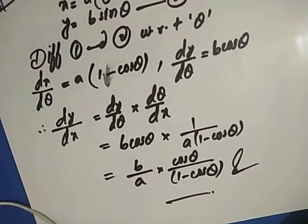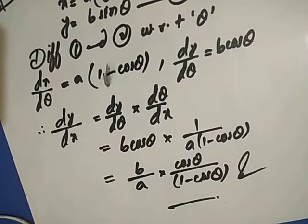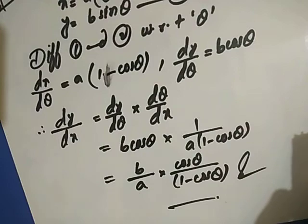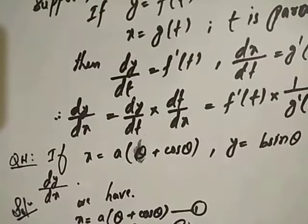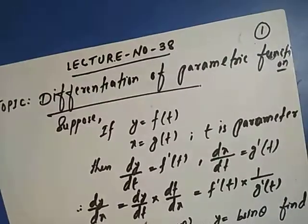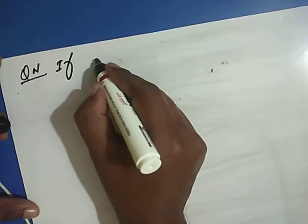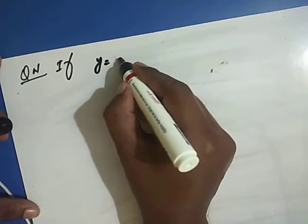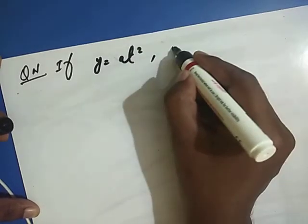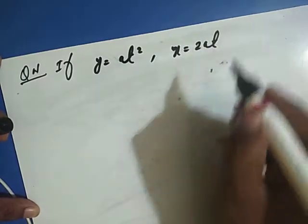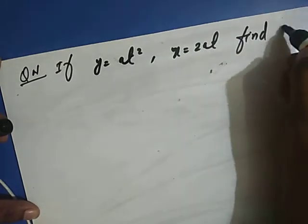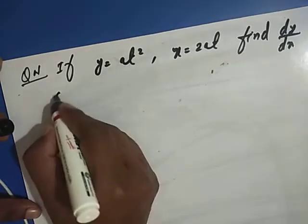That's it. I hope you understand. Now next question: If y equals at squared and x equals 2at, find dy/dx at t equals minus 1.